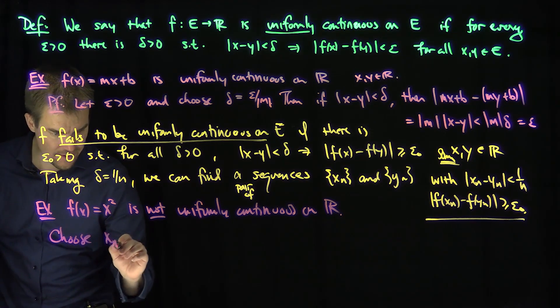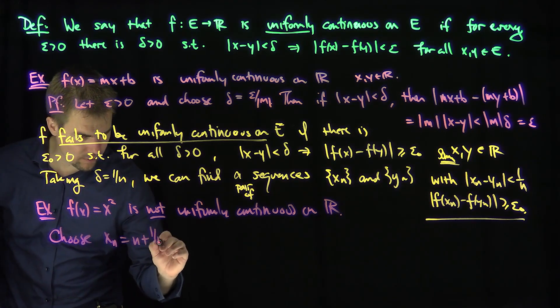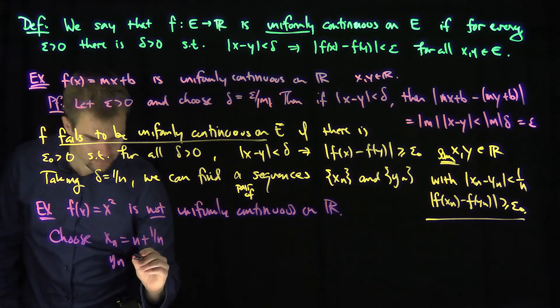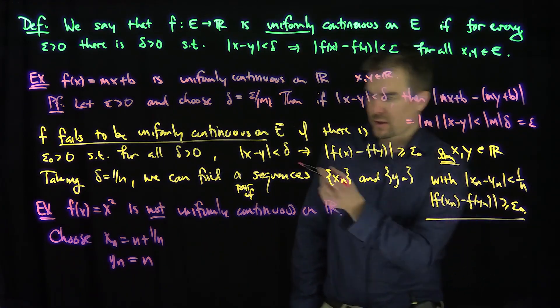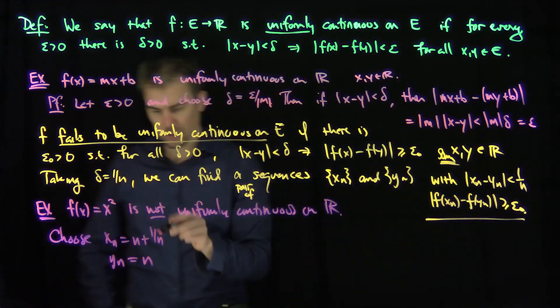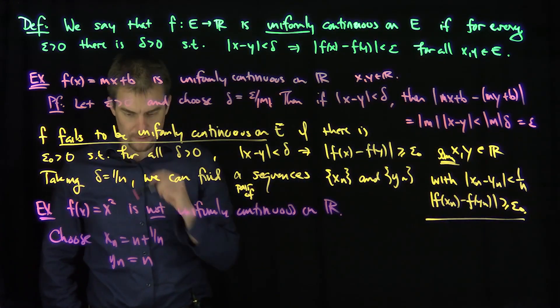x_n to be n plus 1 over 2n, and y_n to just be n. Of course, now their difference is equal to 1 over 2n, but I can make it just a little bit less if I really want.